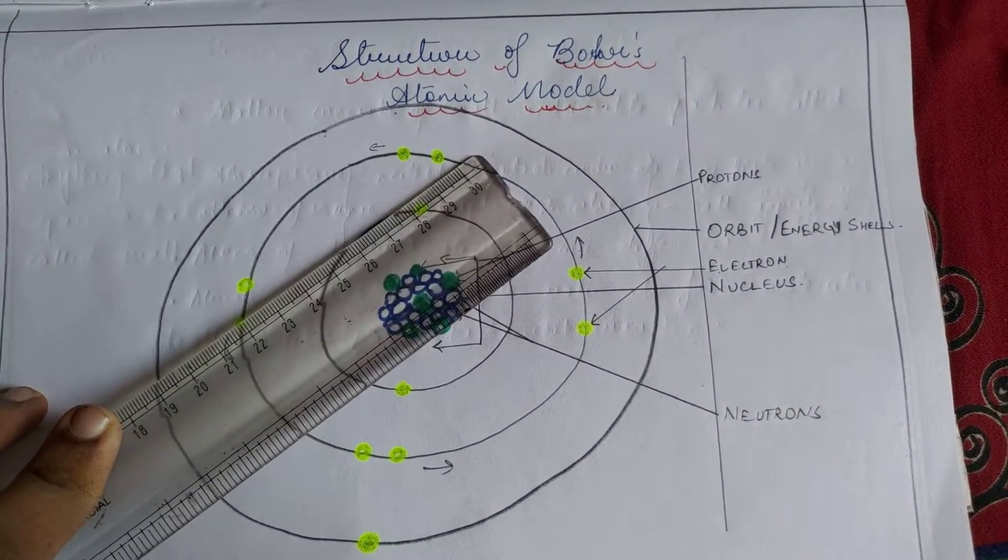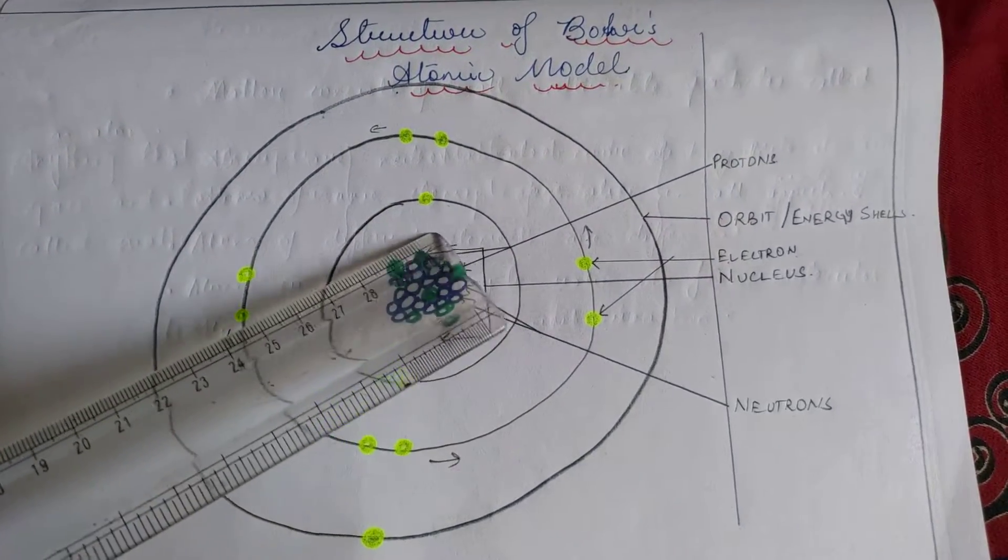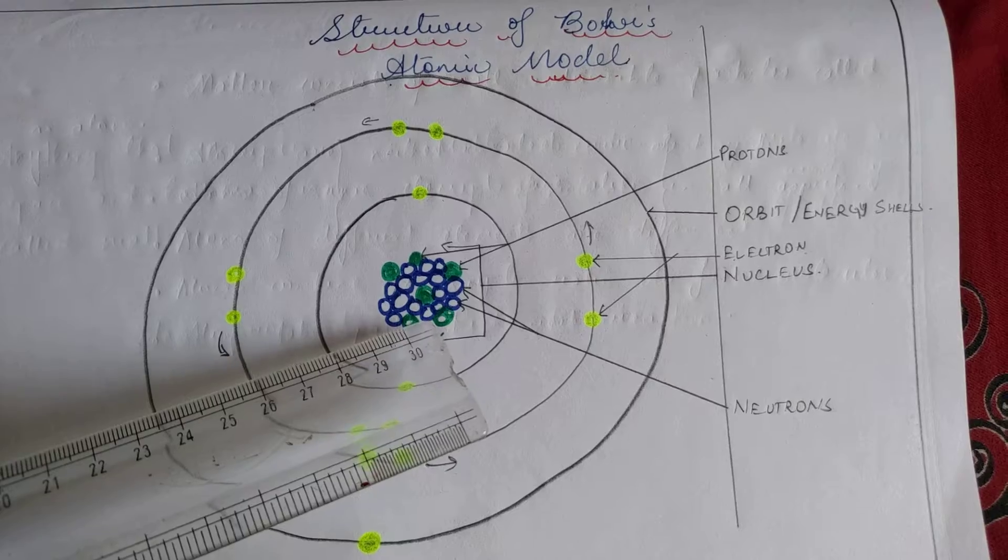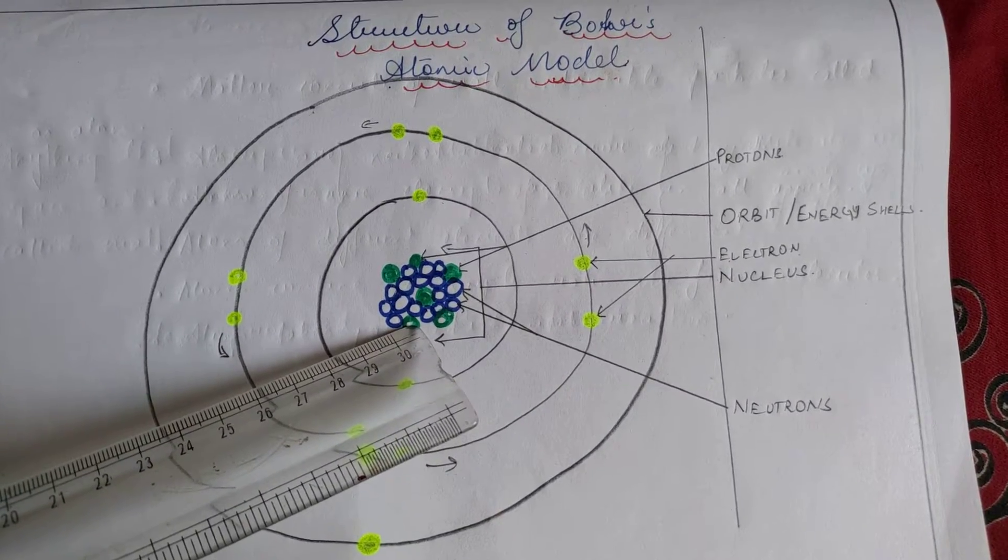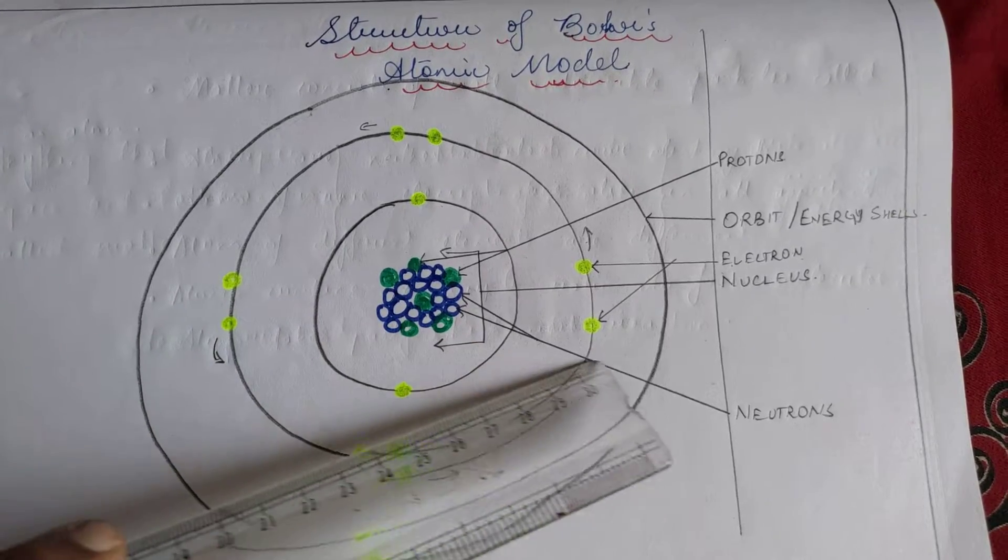Present before you is a structure that was devised by Bohr and is therefore called Bohr's atomic model. This is a most interesting model that was proposed for an atom where you can see at the center is a nucleus which comprises of the green dots which represent protons and the blue dots representing neutrons.